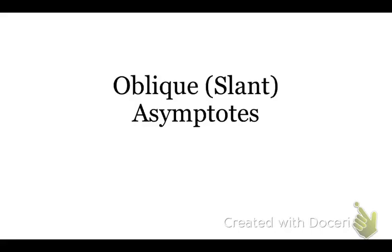Oblique slash slant asymptote — you can call it either way. They will be called both ways as you progress through math, college, and calculus. They will be called oblique and slant, so just know that those two words are synonyms and are interchangeable; they mean the same thing.